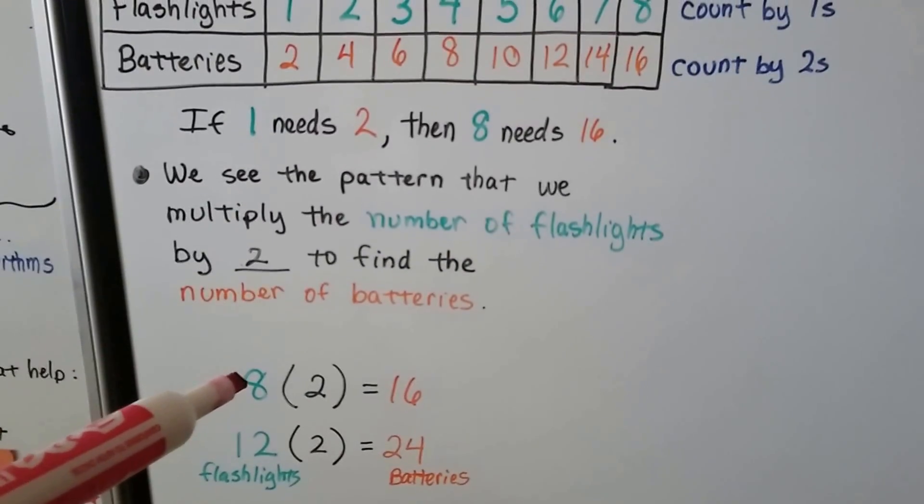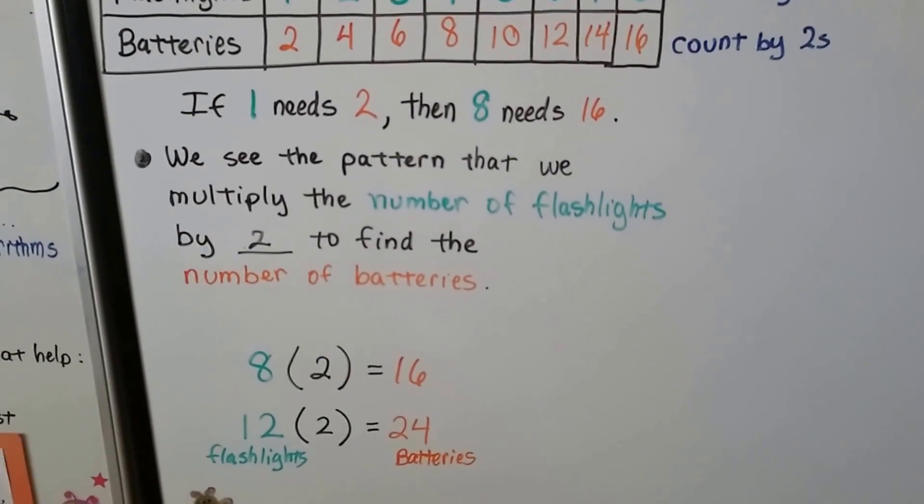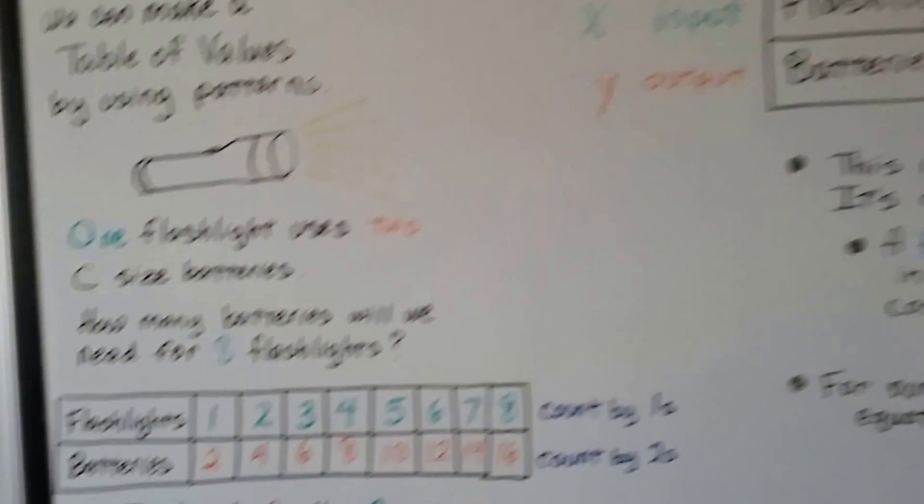So, eight times two would be 16. Twelve flashlights times two would be 24 batteries. See?